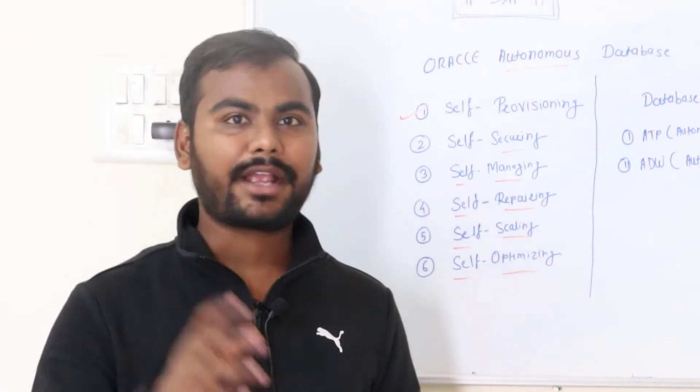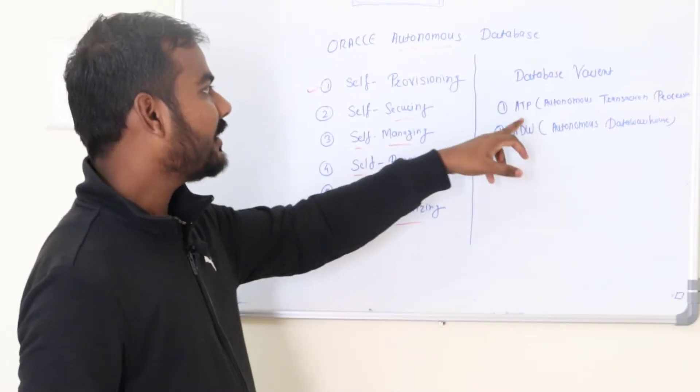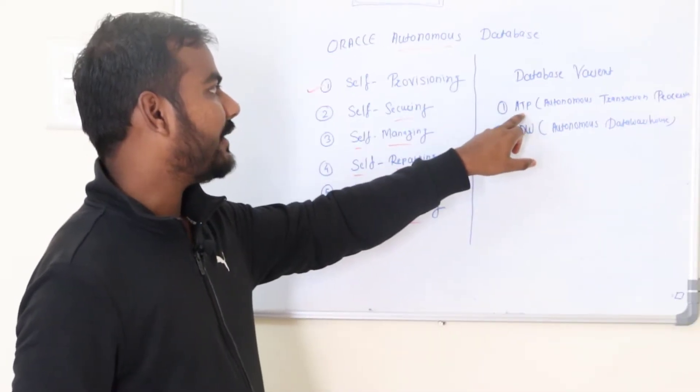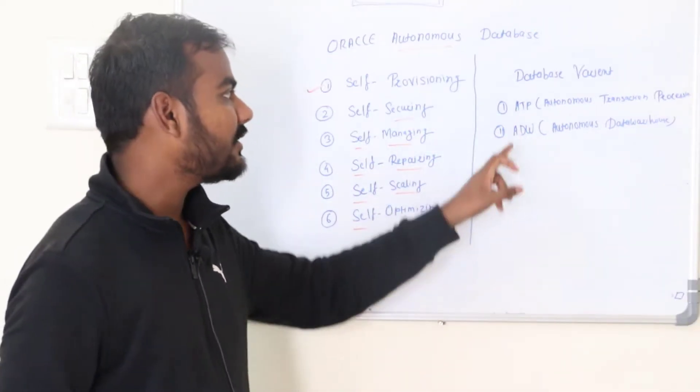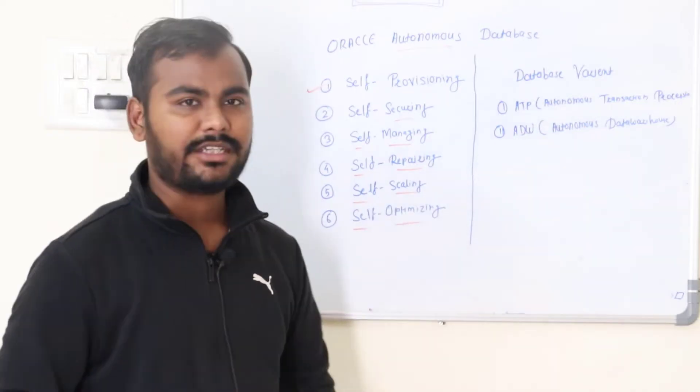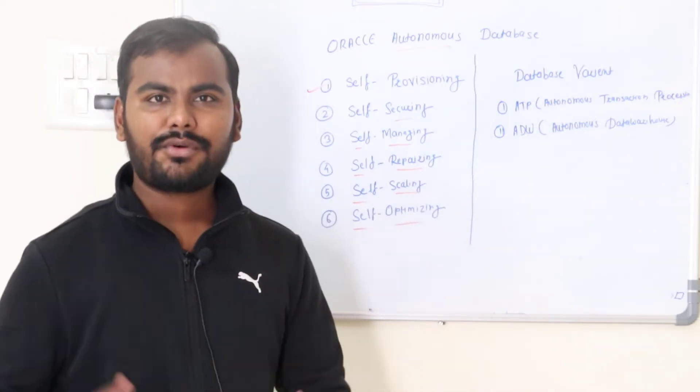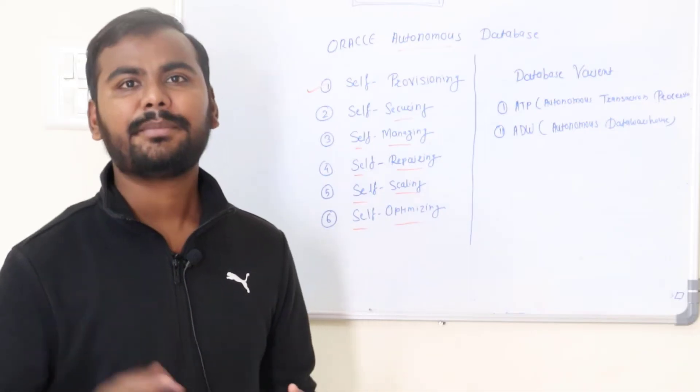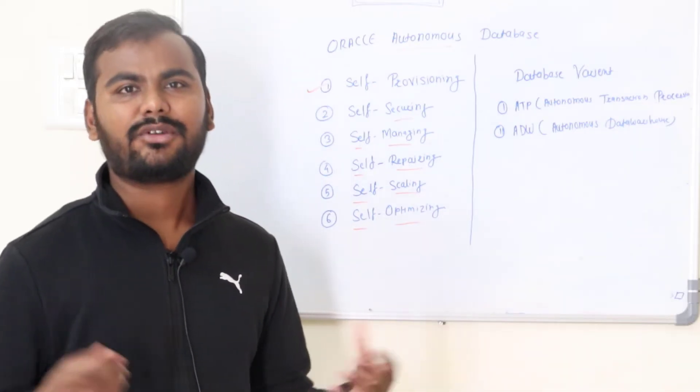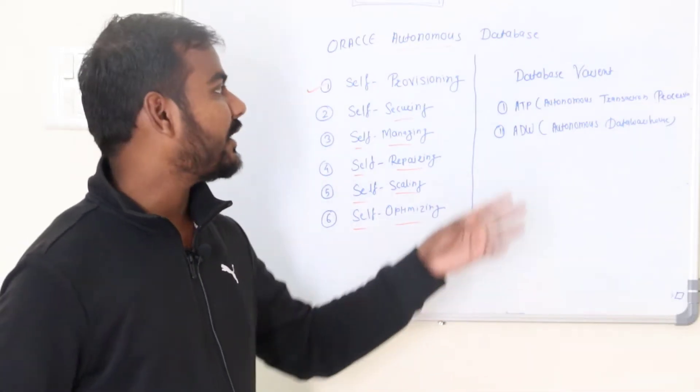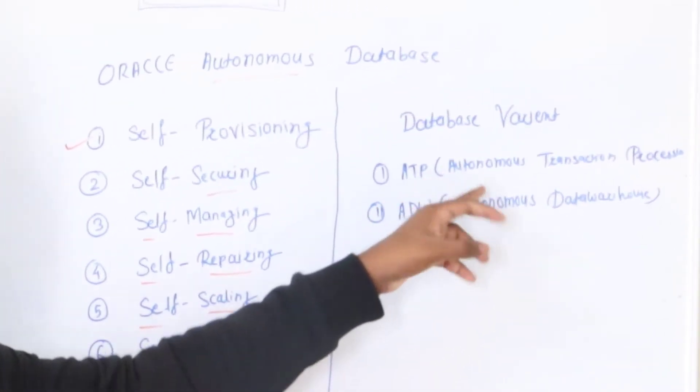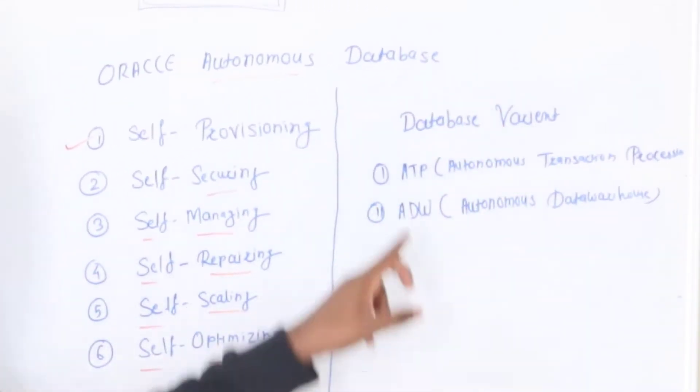There are two variants of Oracle Autonomous Database. There is one variant we call it as ATP, which is Autonomous Transaction Processing. When we are working with Oracle database, some of the time we need to deal with OLTP transactions, just like ATM transactions. In that case you can go ahead with Oracle Autonomous Transaction Processing, which is the ATP variant.